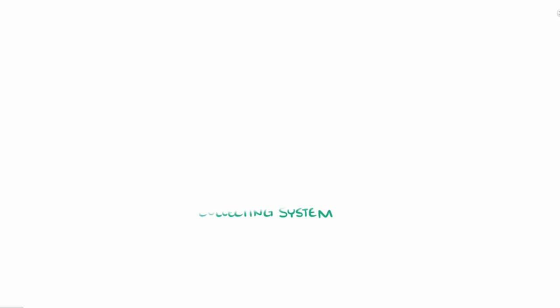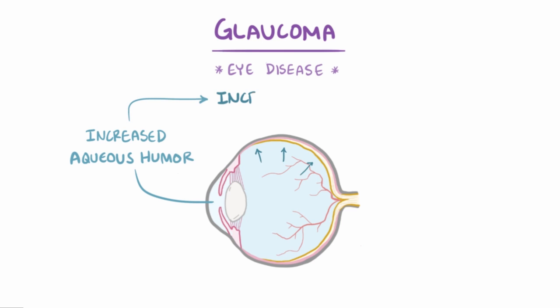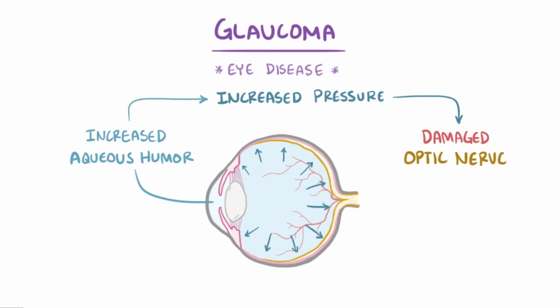As a quick recap, glaucoma is an eye disease where a buildup of aqueous humor causes increased pressure in the eye, and this damages the optic nerve and can result in blindness.